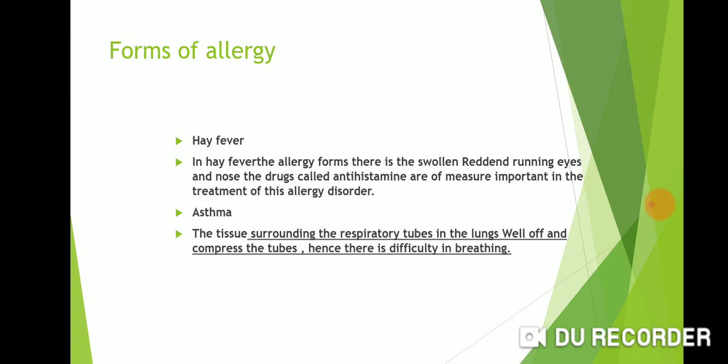In asthma, the tissue surrounding the respiratory tubes in the lungs swells up and compresses the tubes. Swelling caused by allergens like pollen grains makes breathing difficult. The third form is anaphylaxis.